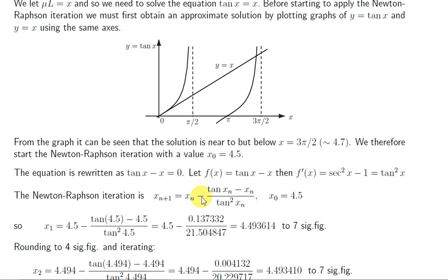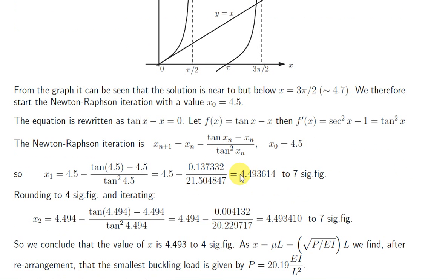Now, x0 is 4.5, so if we let n equals 0, we plug 4.5 into the right-hand side. So we get all of this here. And we will then get out x0 plus 1, or x1, which is 4.493614. We can take this value that we got out, which is x1, plug it into the Newton-Raphson formula with n equal to 1.